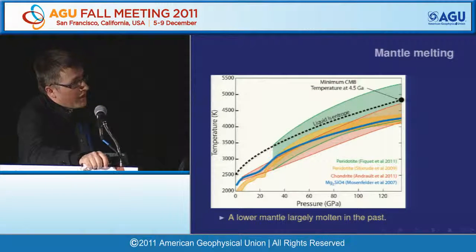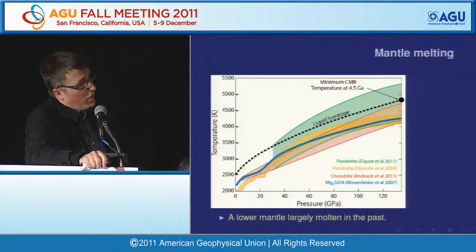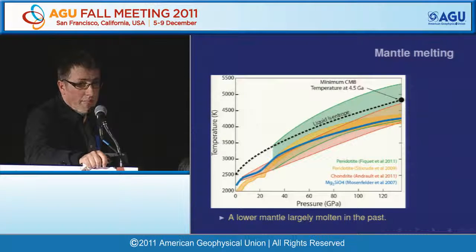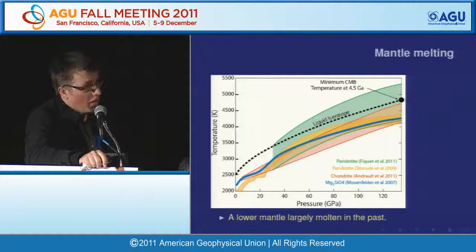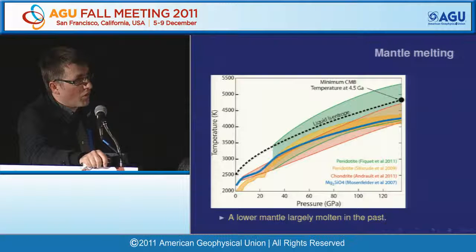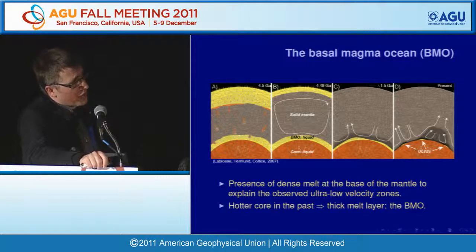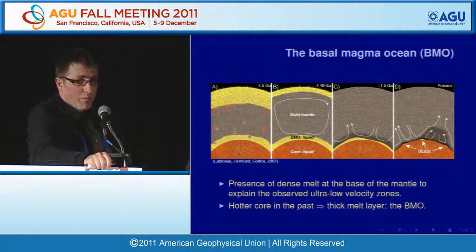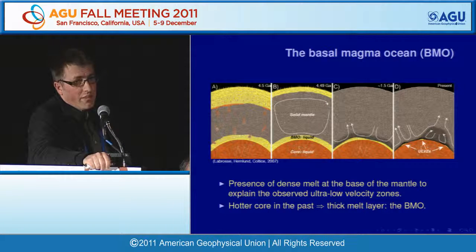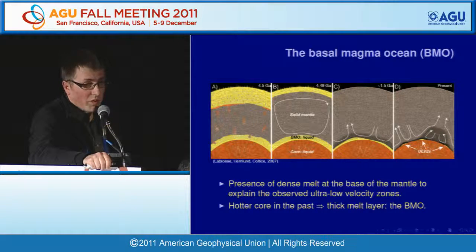In fact, if you compare the expected temperature at the CMB 4.5 billion years ago to the melting temperature in the lower mantle, the lower mantle must have been largely molten at that time. This strong cooling of the core has profound implications for the evolution of the lower mantle—it must have been much more molten in the past. We proposed a scenario where the ULVZs seen now, best explained as partial melt, are remnants of a much larger basal magma ocean that existed in the past.